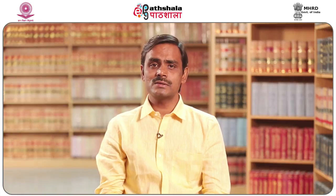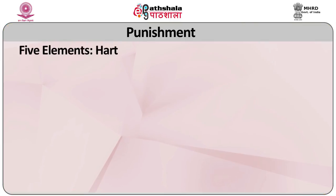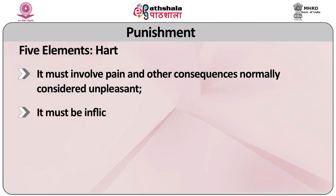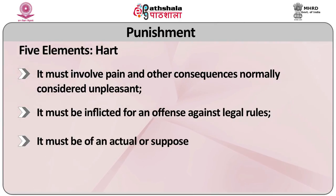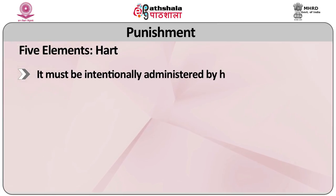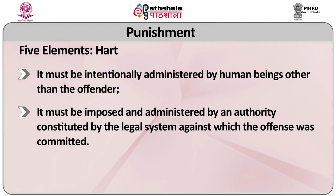According to Packer, the starting point towards finding such a definition would be Herbert Hart's widely remembered essay on Prolegomena to the Principles of Punishment, in his celebrated work Punishment and Responsibility. Hart defines punishment in terms of five elements: first, it invokes pain and other consequences normally considered unpleasant; second, it must be inflicted for an offence against legal rules; third, it must be of an actual or supposed offender for his offence; fourth, it must be intentionally administered by human beings other than the offender; and fifth, it must be imposed and administered by an authority constituted by the legal system against which the offence was committed.